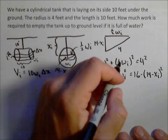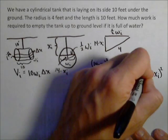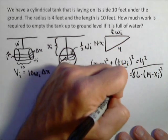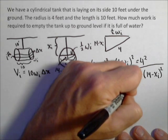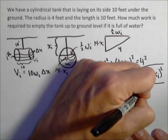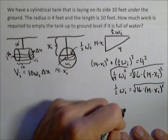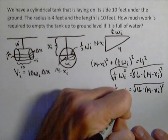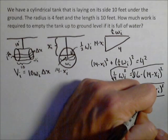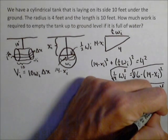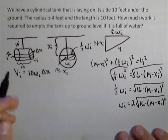Let's square root both sides. So I get one half w sub i equals square root of 16 minus (14 minus x sub i) the quantity squared. Or w sub i equals 2 times the square root of 16 minus (14 minus x sub i) the quantity squared. So there's the substitution I'm going to make for my w sub i.